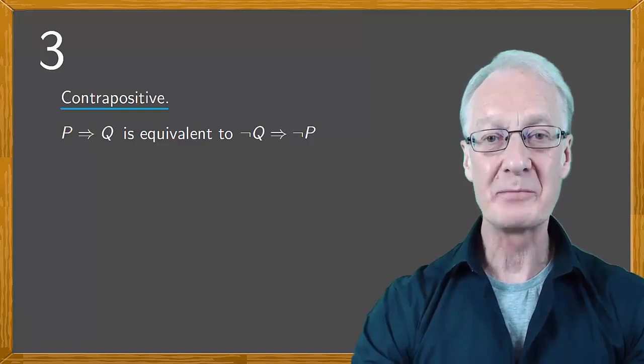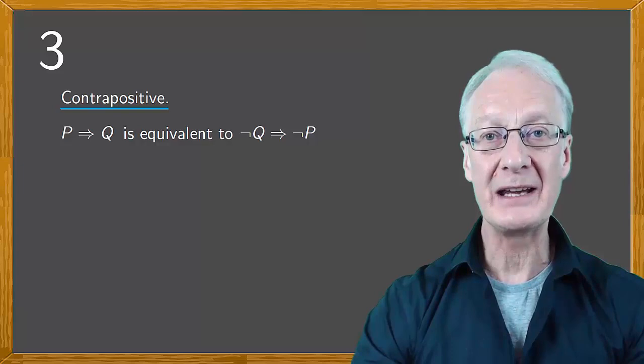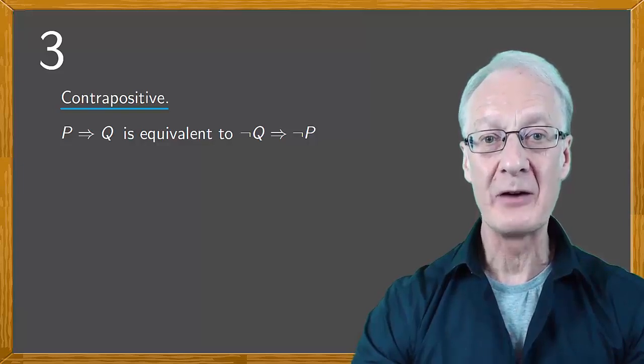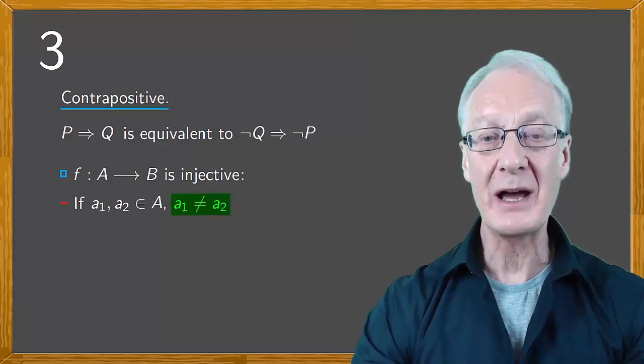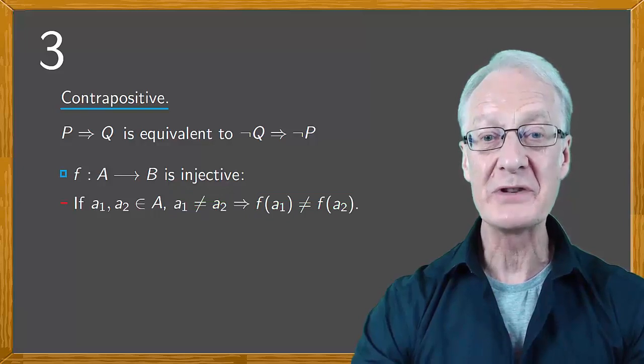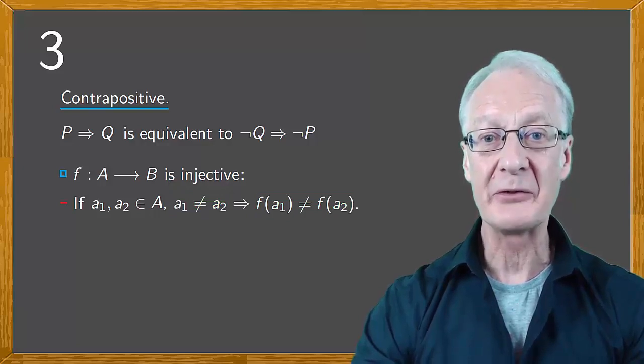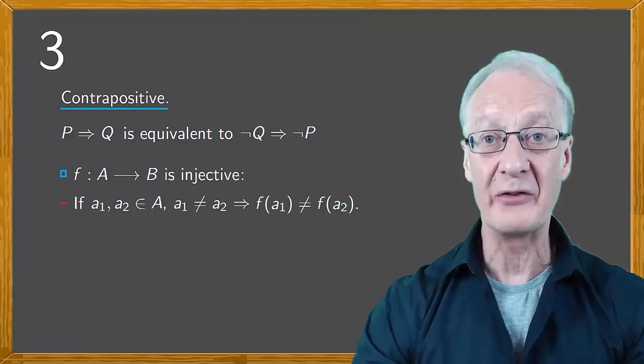We can use the contrapositive not only to prove results, but also to obtain equivalent definitions. For example, a map is said to be injective if, when two elements are different, they have different images. Using the contrapositive gives us an equivalent definition of an injective map.